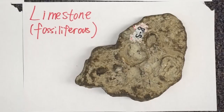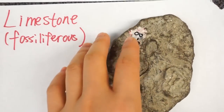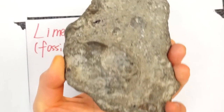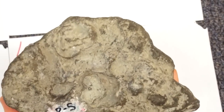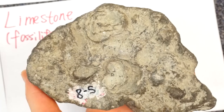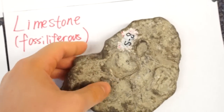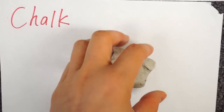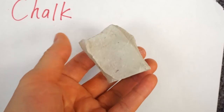Here is a sample of fossiliferous limestone with visible shells and shell fragments. A sample of chert is composed of microscopic marine shells.